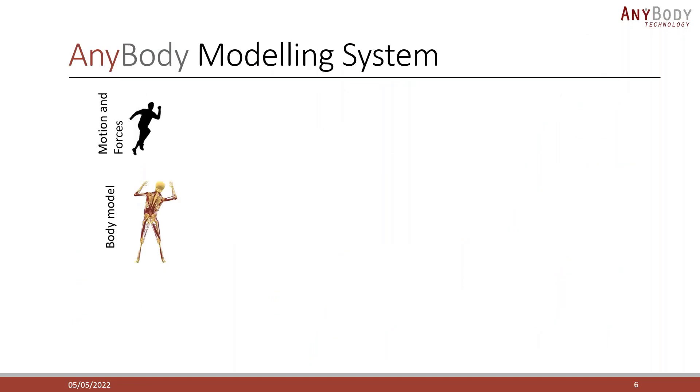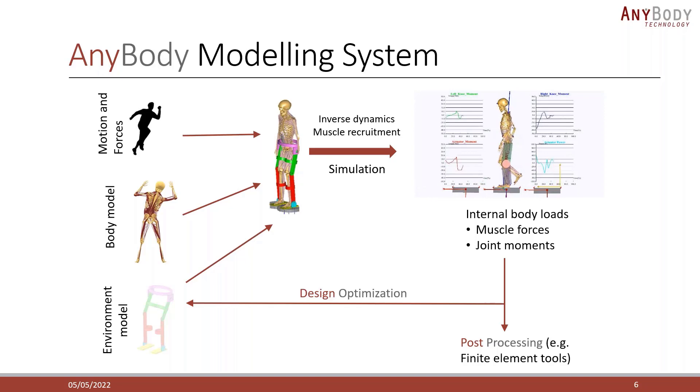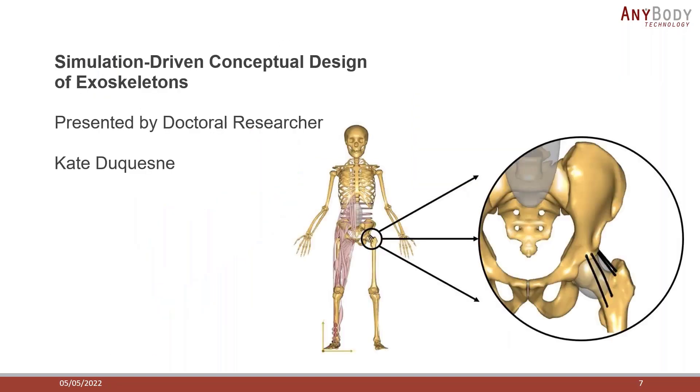The typical workflow in Anybody could look something like this. You provide the recorded motion data as input, and you can then use the body models which you or others have built. You can provide some kind of environment which could be special equipment or for example an exoskeleton. Then you can use Anybody to combine all of these things and solve the muscle recruitment and run the inverse dynamics simulations. This basically means that we go from motion to calculate the internal body loads and the interaction with the environment. You can then output the results and use it for some kind of post-processing which could be a finite element tool. Many users also choose to complete this loop by doing design optimization and then run this cycle multiple times.